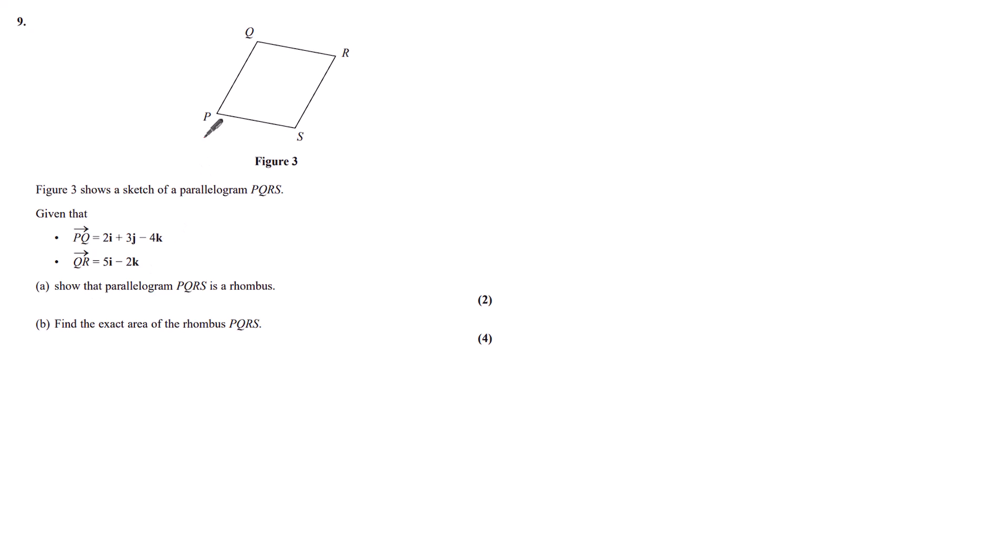Part A: show that parallelogram PQRS is a rhombus. Well, since we're told it's a parallelogram, we already know the length of PS equals the length of QR, and we know the length of PQ equals the length of SR.